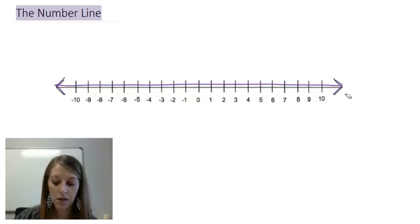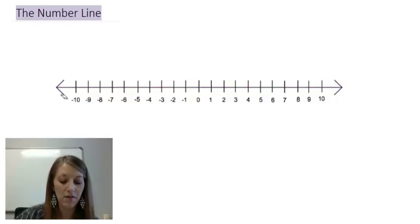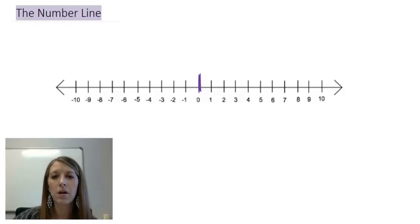Now you notice here that this has both positive and negative numbers on there, and zero is in the middle. Zero is kind of a weird number, because sometimes it's considered positive, and sometimes it's considered neither negative nor positive.